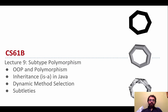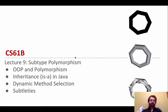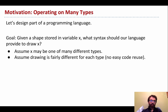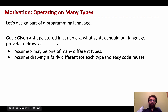Today we're going to be talking about how to write code that can operate on many types of data, and the solution we're going to come up with is ultimately subtype polymorphism. It sounds scary, but you'll see it isn't quite so bad. The big picture is: given a shape stored in a variable, how do we write code that draws it?